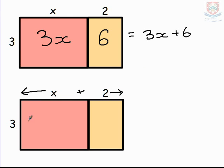So to find the area for the whole shape, we're going to have 3 and we're going to multiply it by x plus 2.